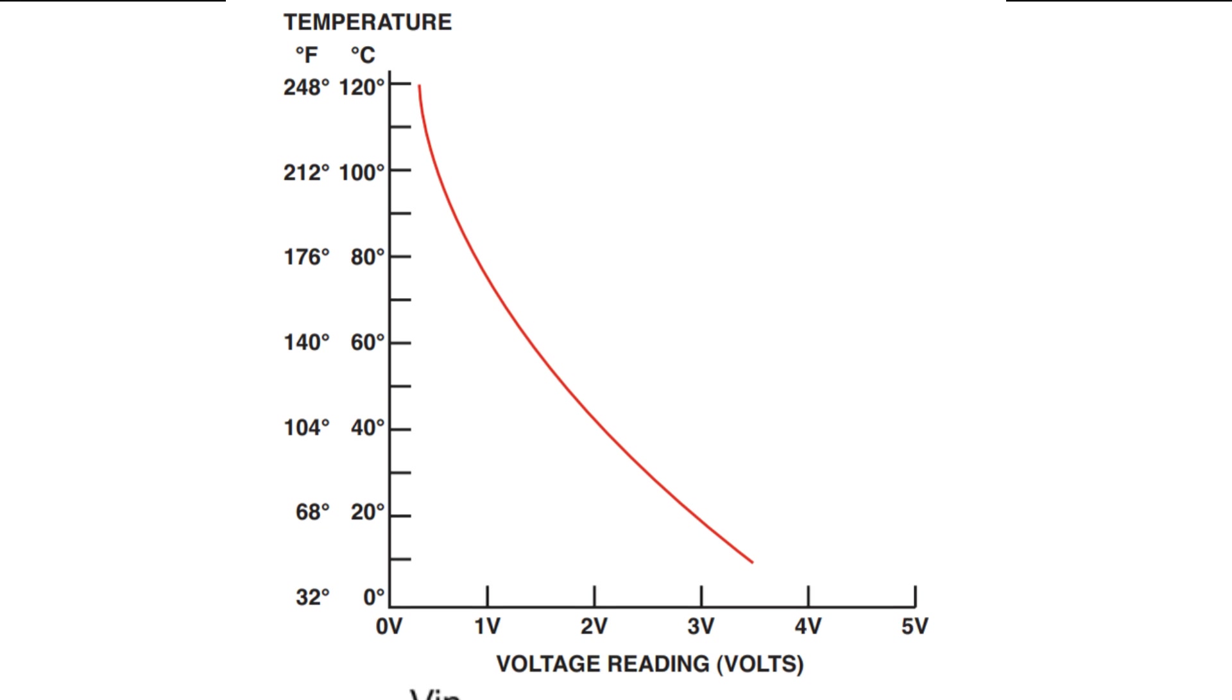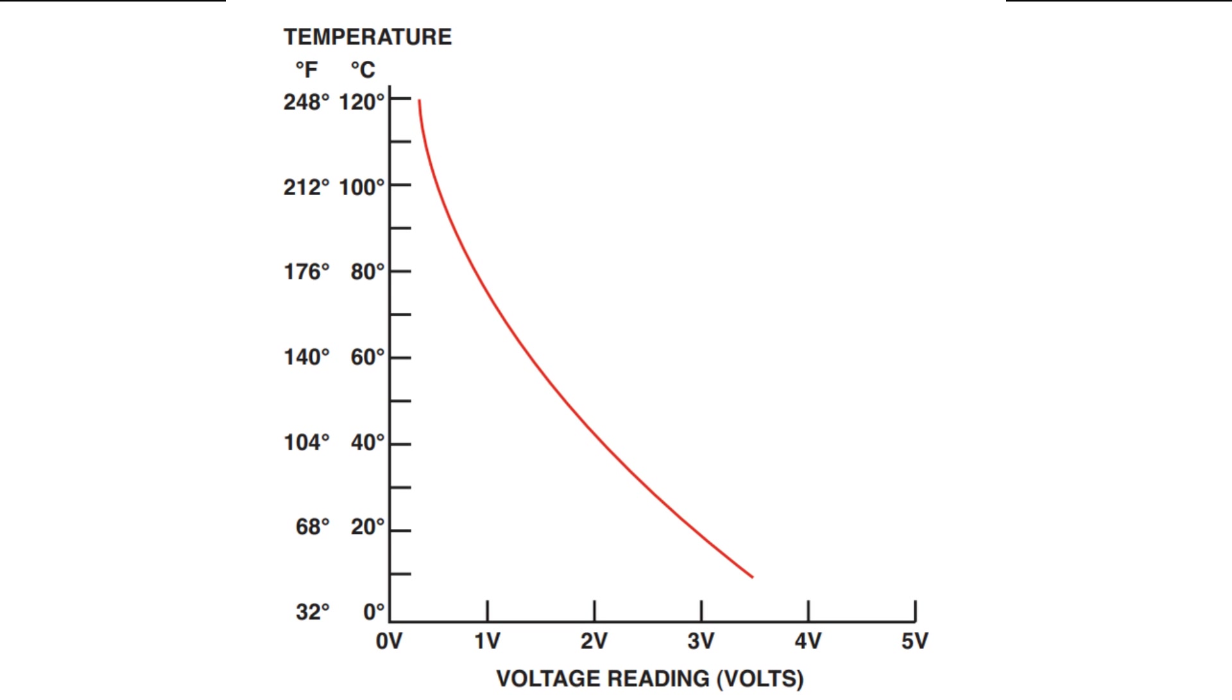The voltage measured across the thermistor, or across the fixed resistor, depending on the circuit design, becomes the output signal. This output voltage decreases with increasing temperature, due to the decreasing resistance of the thermistor. This change in voltage is what the engine control unit reads and interprets to determine the coolant temperature.